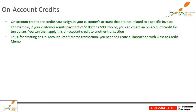On-account credits are credits you assign to your customer accounts that are not related to a specific invoice. For example, if your customer remits a payment of $100 for a $90 invoice, you can create an on-account credit for $10, and then apply this on-account credit to another transaction. Thus, on-account credits are credit memos which can be applied to more than one transaction. To create this on-account credit memo transaction, we need to go to the create transaction page and select the transaction class.